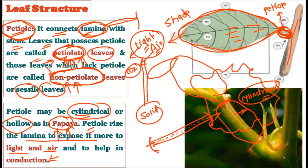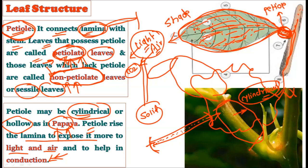At the same time, the petiole helps in conduction. Whatever food material is created in the leaves is transported through the petiole to reach all over the plant body. Similarly, water coming from the roots travels via the stem and via the petiole to reach other parts of the leaves. So the petiole performs the important function of conducting both food and water.